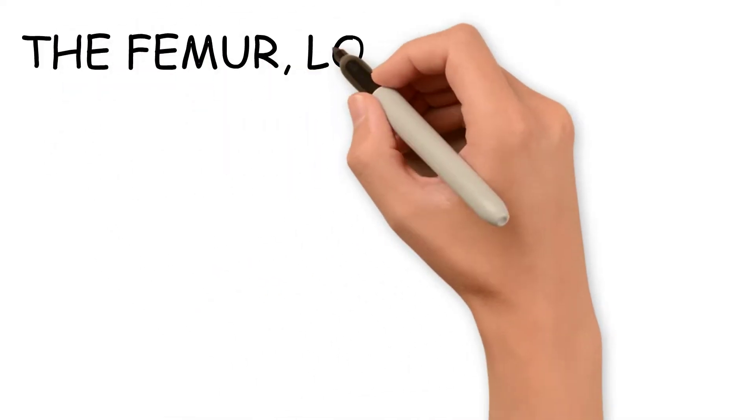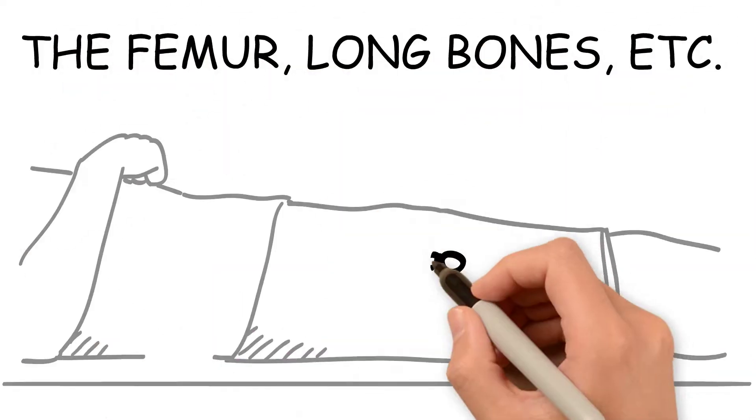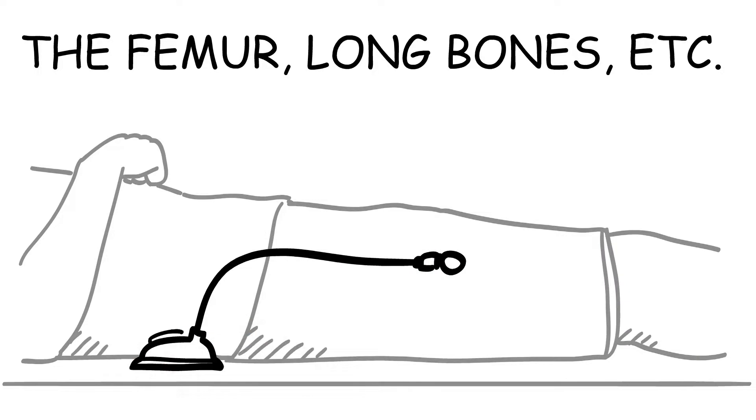AP femur: Place the marker midway between anterior and posterior surfaces of the shaft on the lateral side of the bone.